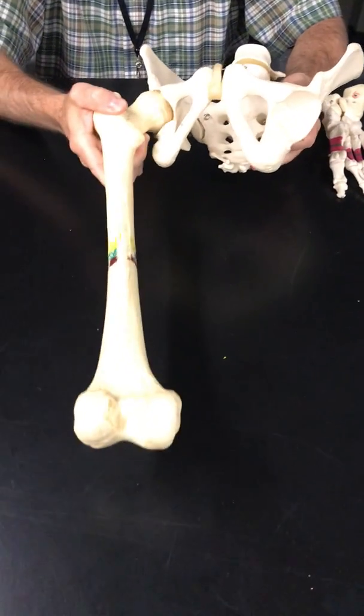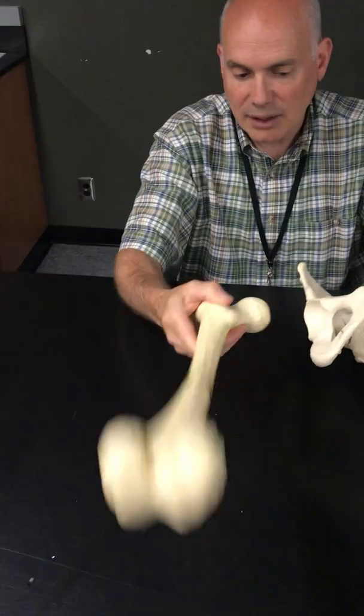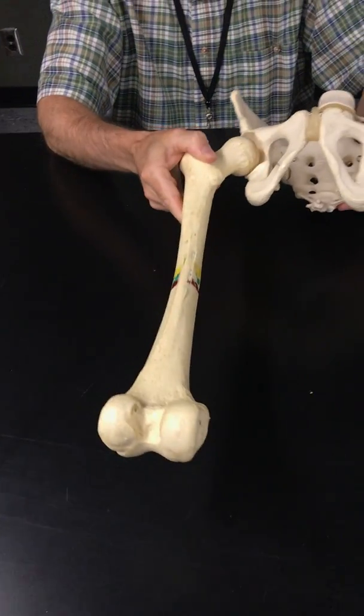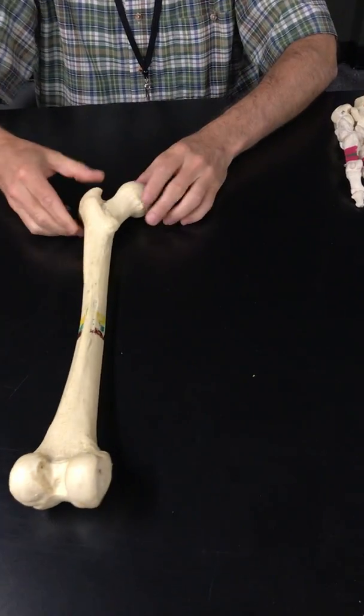Now we're going to add the femur to our discussion. This is the largest bone of the body. And again, it creates a nice ball and socket joint, fits into the acetabulum of the coxal bone. So let's put that aside. So here it is.